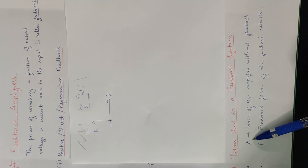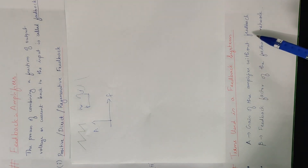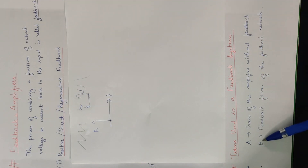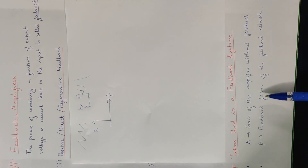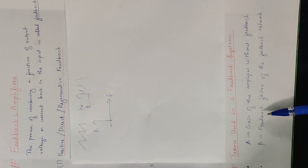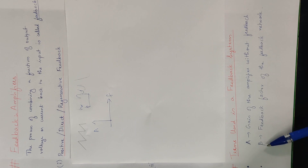A is the gain of the amplifier without feedback. Beta is the feedback factor of the feedback network. That is, if we use a block of feedback, the factor is beta.